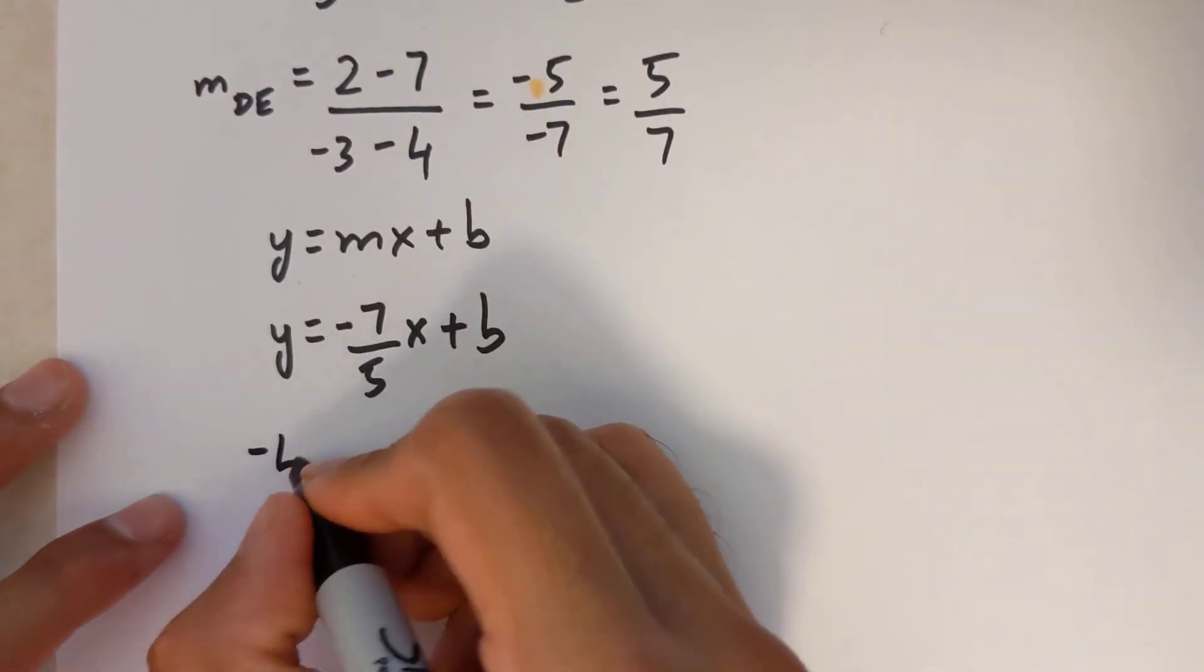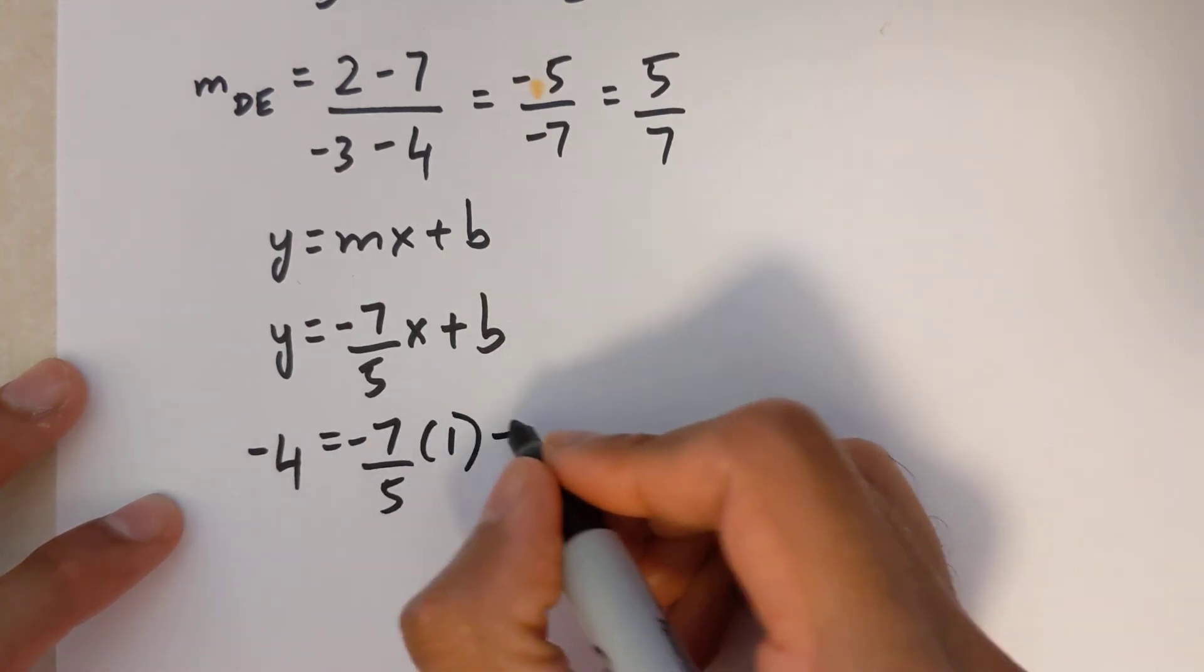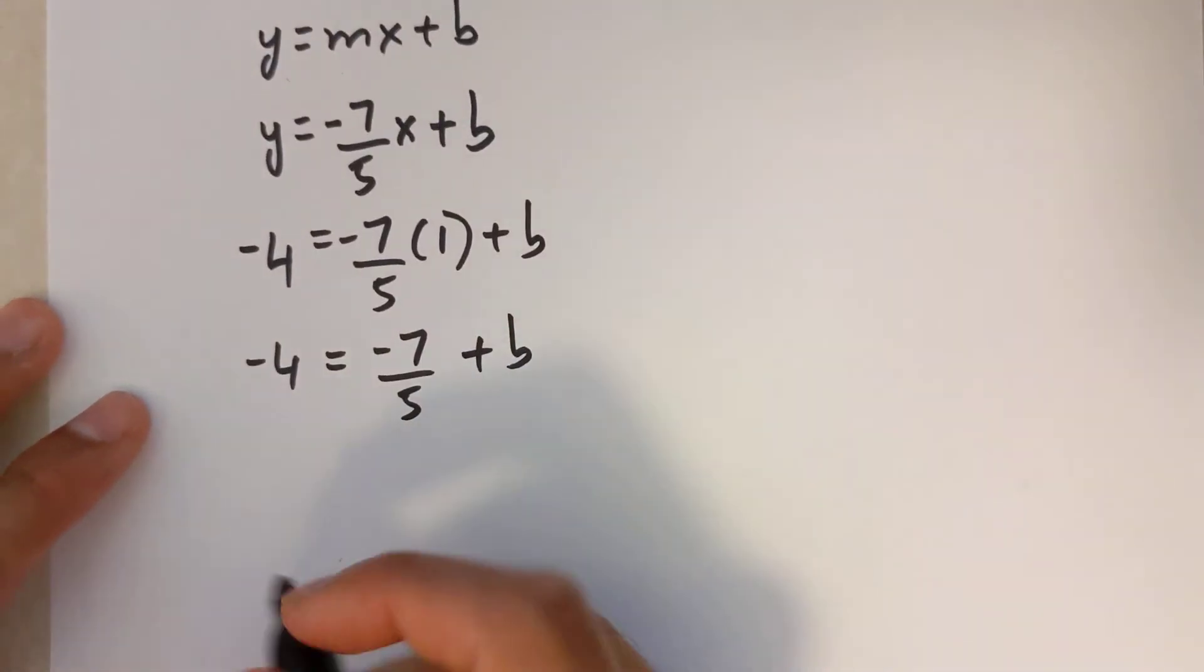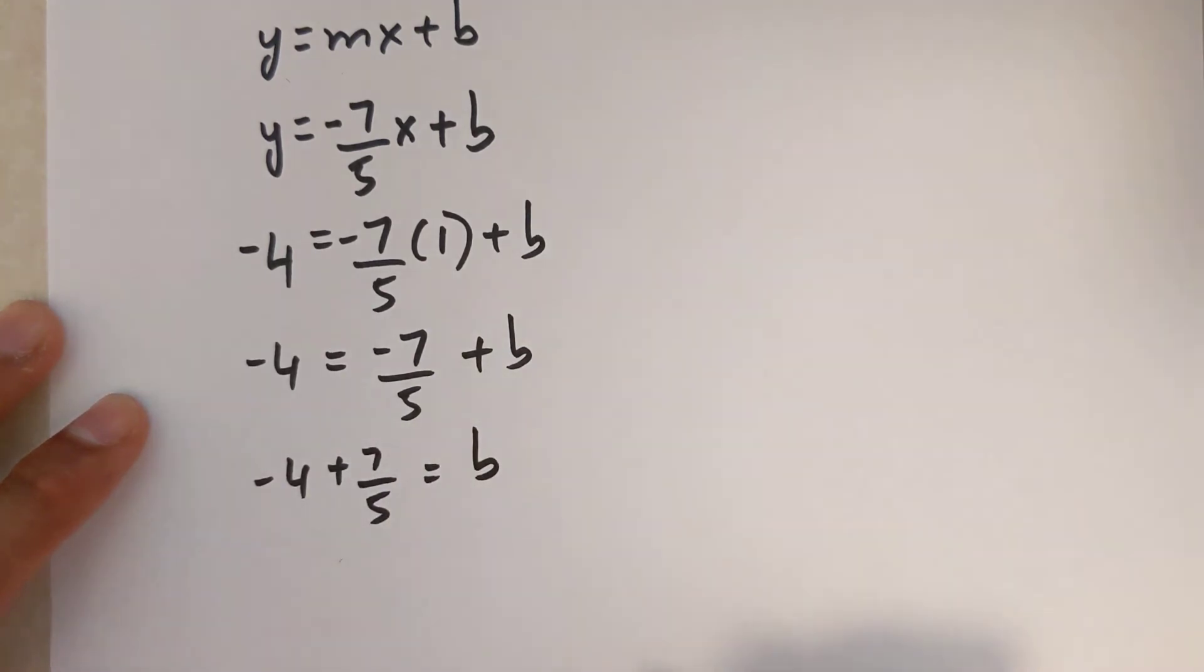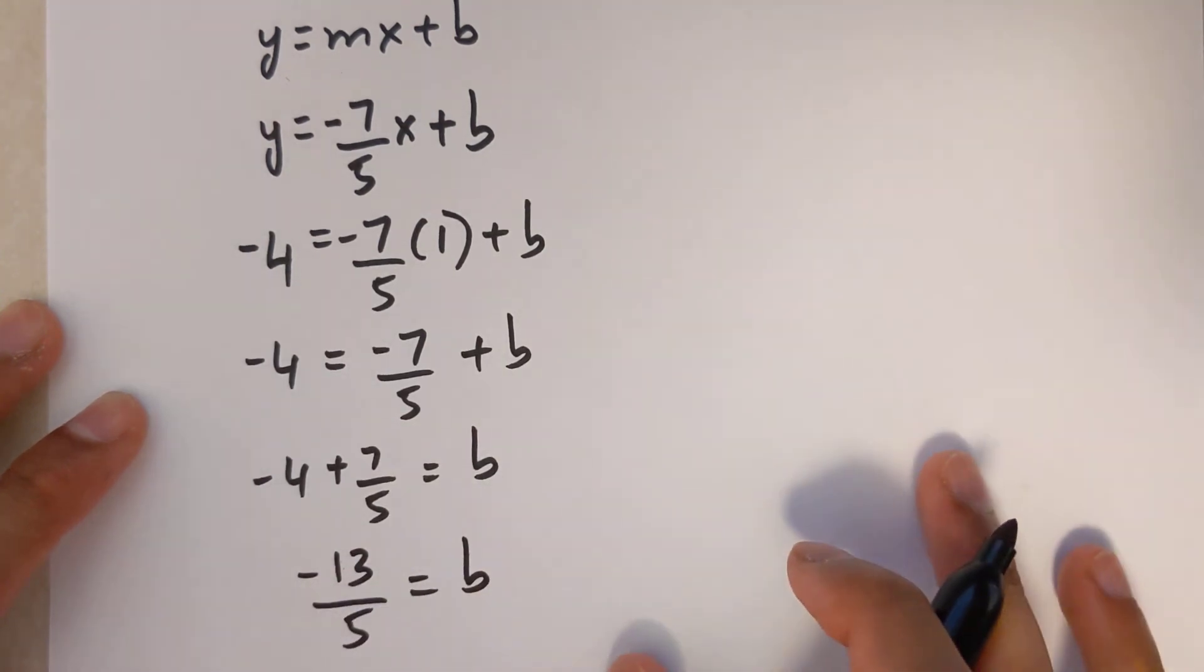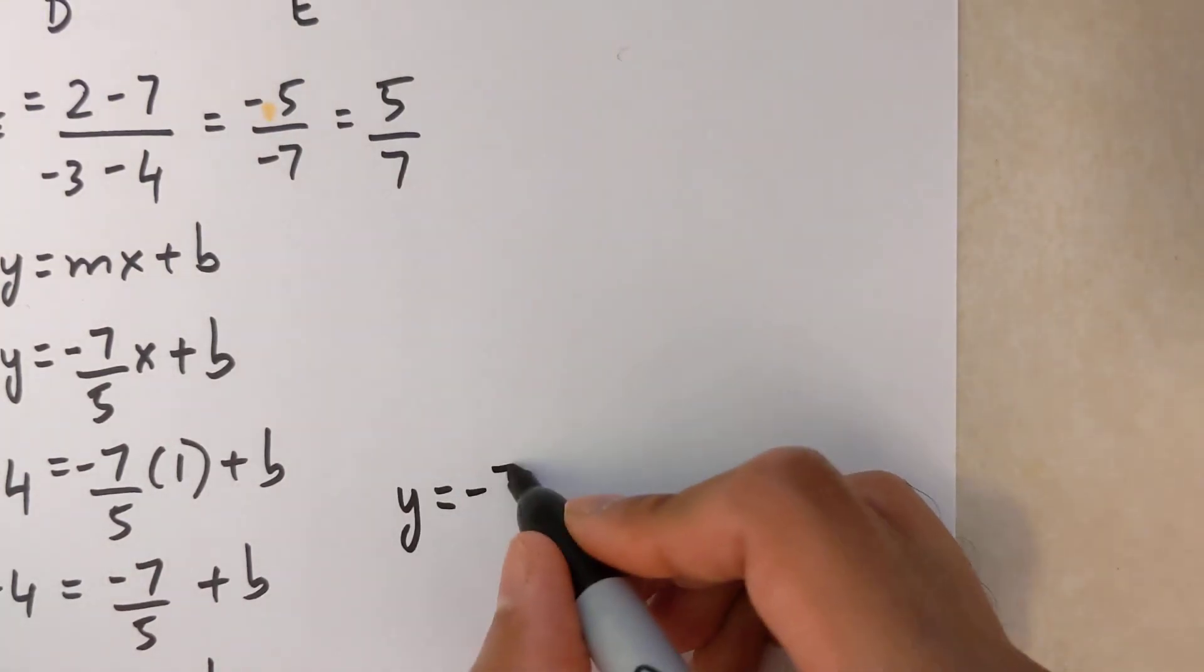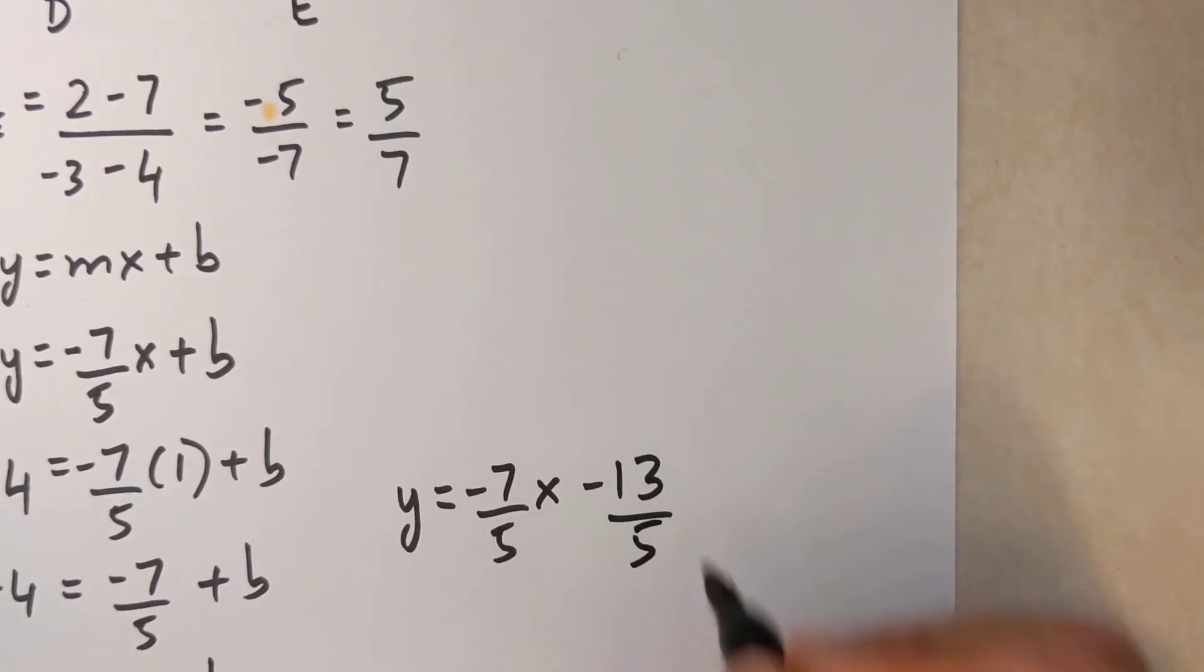Negative 4 equals negative 7 over 5 times 1 plus B. Negative 4 equals negative 7 over 5 plus B. Negative 4 plus 7 over 5 equals B. If I sub that into my calculator I get negative 13 over 5 equals B. So my equation is Y equals negative 7 over 5 X minus 13 over 5.